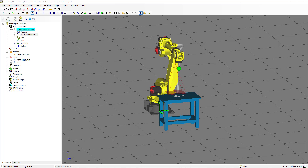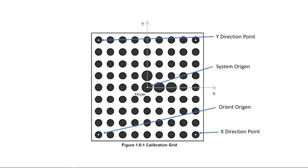We saw already that the calibration grid frame can be set up using the four-point method — that is, we select an arbitrary user tool where we locate the eye pointer, set the calibration grid on a plane parallel to where the part is, and teach the four points: the orient-origin, the X-direction, the Y-direction, and the system-origin. There is also another way to set the calibration grid frame, and that is the automatic calibration, which doesn't require any touch-up.